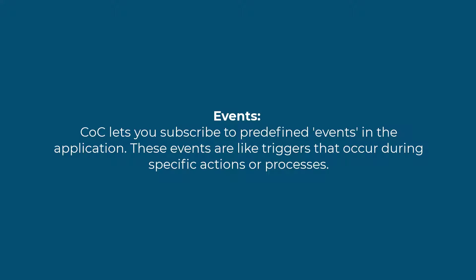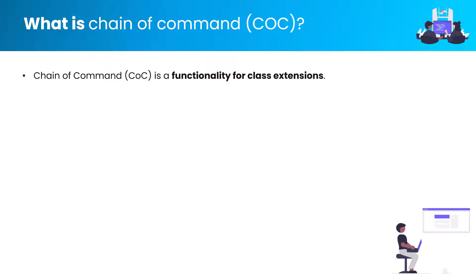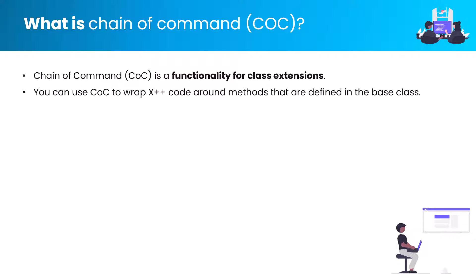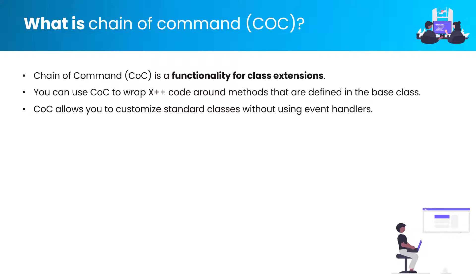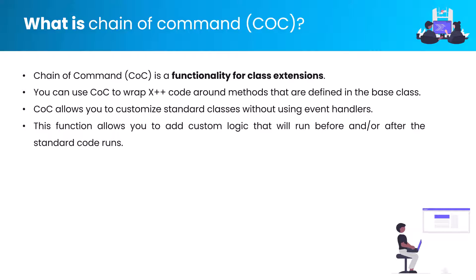The magic of Chain of Command is that it allows you to seamlessly connect your custom logic to these events, extending the application's capabilities without altering the standard code. Chain of Command is a functionality for class extension, and you can use it to wrap X++ code around methods defined in the base classes. It also allows you to customize standard classes without using event handlers, and lets you add custom logic that will run before and/or after the standard code.